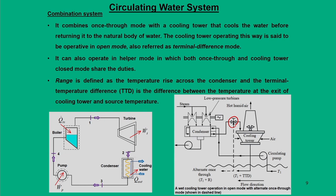In both cases, the initial water temperature is T1. In once-through mode the final temperature is T1+R, while in combination mode the final temperature is T1+TTd. TTd is the terminal temperature difference - the difference between the exit temperature of the cooling tower and the source temperature. Range is defined as the temperature rise across the condenser.